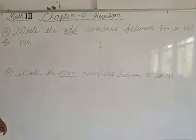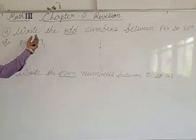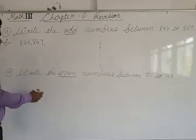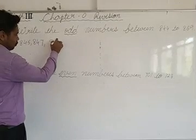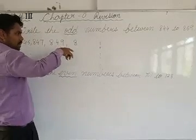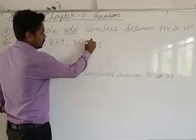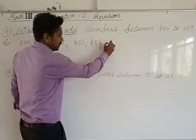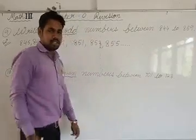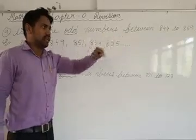Then 846 is divisible, so we skip it and write 847. Likewise, every other number we have to write: 849, then 851, 853, 855, and so on. You have to write the rest of all by yourself up to 869.